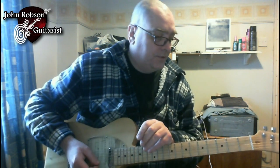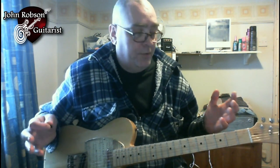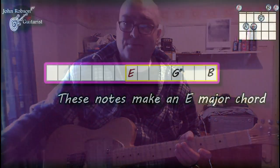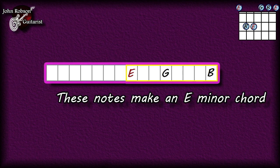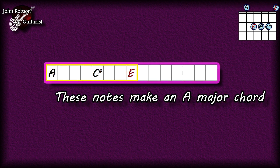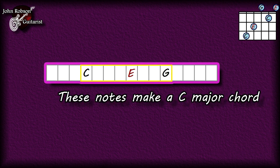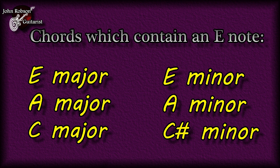Now we have to figure out which chords actually contain an E note — that will give us a set of possible chords, and one of them will be the chord we're hearing in the song. An E major chord quite obviously contains an E note, as does an E minor chord. An A major chord also contains an E note, and so does an A minor chord. A C major chord contains an E note, and so does a C# minor chord.